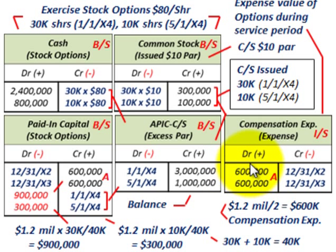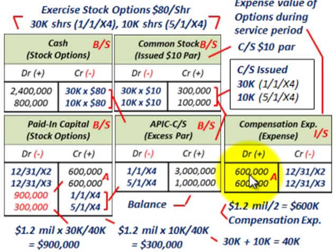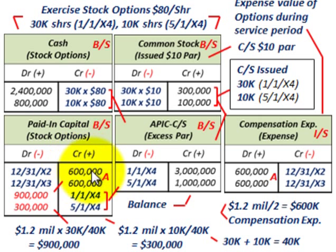Our debit is to compensation expense on the income statement, and we need a credit — we credit the paid-in capital account for stock options. At the end of year X2, we credit paid-in capital stock options for $600,000, balancing with the $600,000 debit to compensation expense. Same for 12/31/X3 — we credit paid-in capital stock options another $600,000. So our total paid-in capital stock options balance before anything is exercised is $1.2 million, matching the total $1.2 million compensation expense recognized over the vesting period.